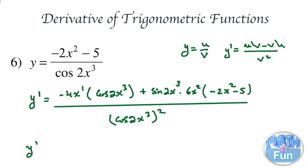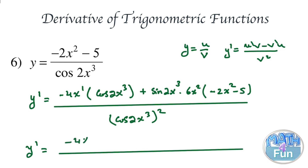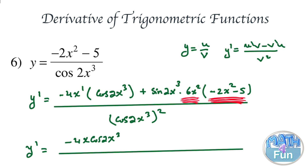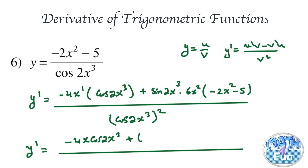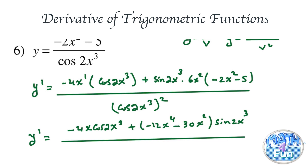Simplifying: y prime equals minus 4x cosine 2x cubed, plus the quantity minus 12x to the power 4 minus 30x squared — from multiplying 6x squared by minus 2x squared and by minus 5 — times sine of 2x to the power of 3, all over cosine squared of 2x to the power of 3.